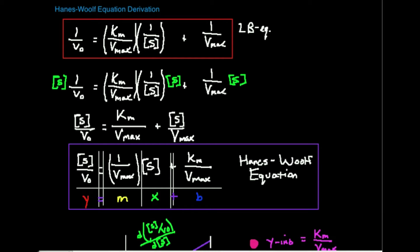The Lineweaver-Burk equation is useful for calculating the Km and Vmax of an enzyme. We know by now that Vmax is very difficult to estimate directly from a Michaelis-Menten plot, so we transform the equation into this, which is also called a double reciprocal equation. We plot one over the initial rate versus one over substrate concentration, and we get a straight line in the form of this equation.